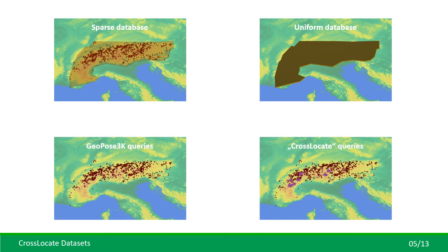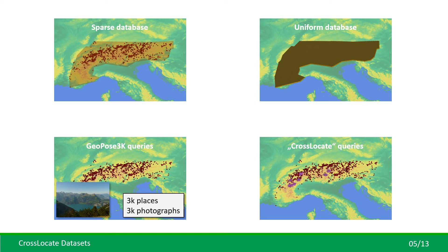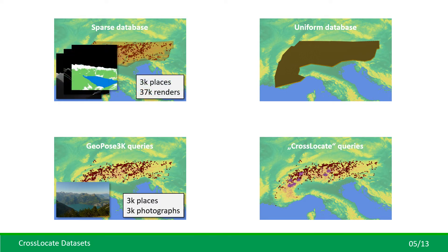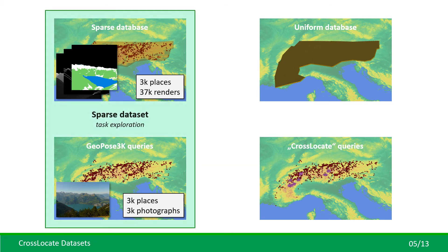To complement these new synthetic databases, we use and curate existing datasets of query photographs. The GeoPost 3K dataset contains 3000 photographs from 3000 places. Correspondingly, our sparse database contains rendered images from the same 3000 places with 12 views at each place. The resulting sparse dataset serves for fast and simple experimentation and task exploration.